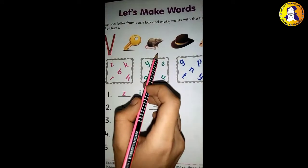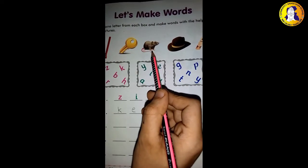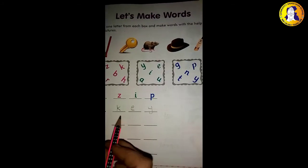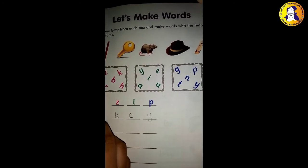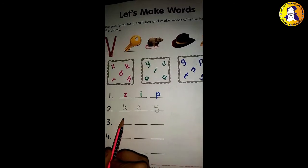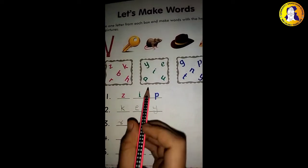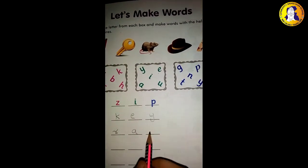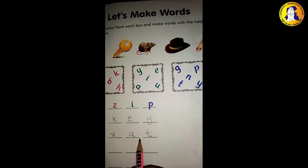After that we will have to go to the third box. Which one? Rat. Rat means chouha. Here is the first letter R. Second is A. Third is T. Then what is it? Rat.